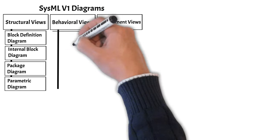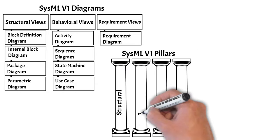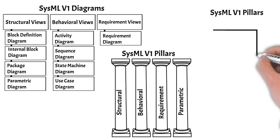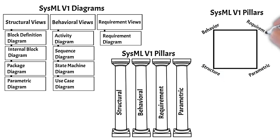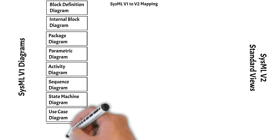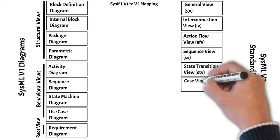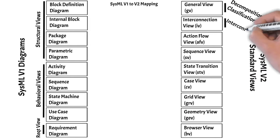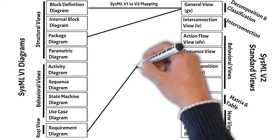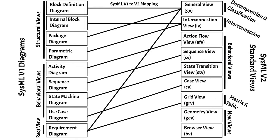To review, SysMLv1 has nine diagrams and four pillars. The SysMLv1 diagrams will map to the SysMLv2 views, and the SysMLv1 pillars will map to the SysMLv2 capabilities. Let's look at the mapping between SysMLv1 diagrams on the left to SysMLv2 standard views on the right in more detail. Pause the video as needed to review the SysMLv2 views and their corresponding SysMLv1 diagrams.